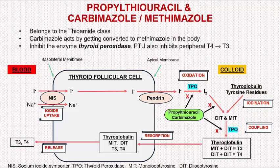Another important point: in addition to inhibiting thyroid peroxidase, propylthiouracil also inhibits the peripheral conversion of T4 to the more active hormone T3.